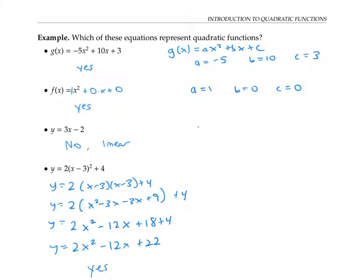A function that is already written in the form y equals a x squared plus b x plus c is said to be in standard form. So our first example, g of x, is in standard form.